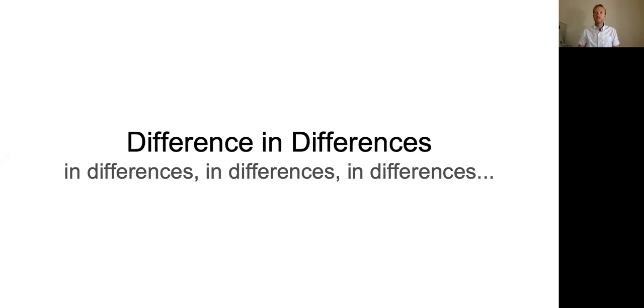Now we're going to move to two more different types of procedures to get causal impact estimates. One is called difference-in-differences and the other is called matching. Let's go first into difference-in-differences. That's a weird name — differences and differences — what does that mean?